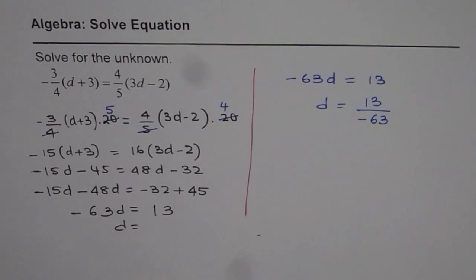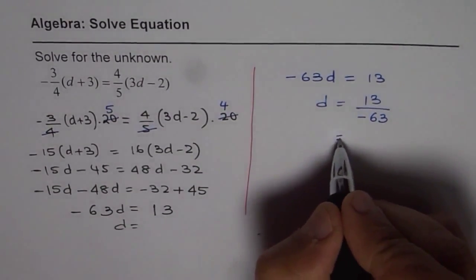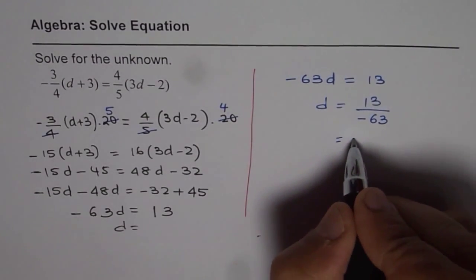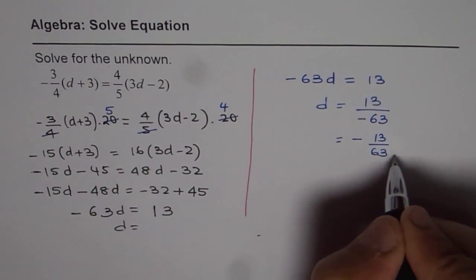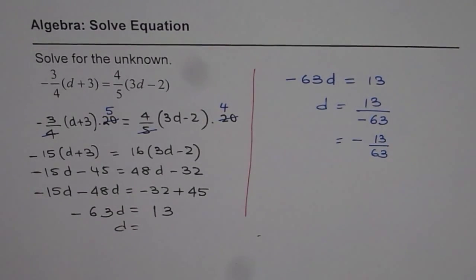Our answer is d equals 13 over minus 63, or we can write this as minus 13 over 63. That is a better way of writing. That is the solution for this question. Thank you.